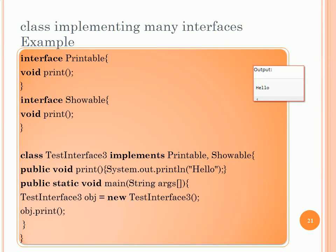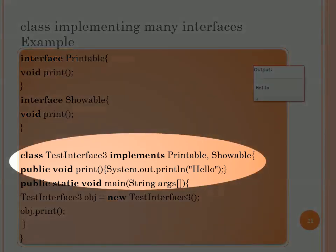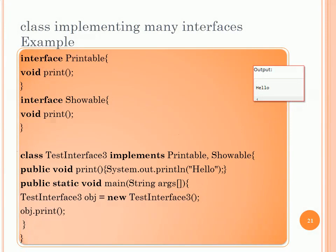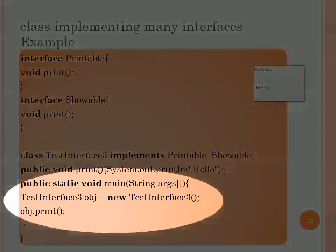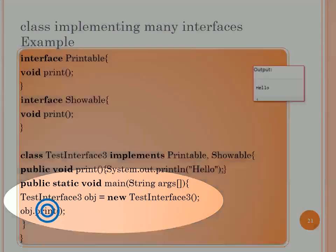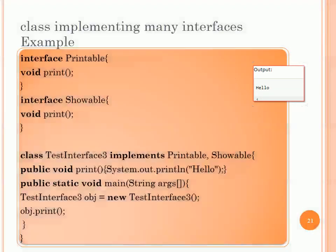Let's take an example of multiple implementation in Java. We create two interfaces: Printable and Showable, both having one abstract method called print. We create a class TestInterface3 that implements both. It implements one method called print — it doesn't matter whether it belongs to Printable or Showable, since both are abstract methods without a body. The implementation simply prints 'hello'. In the main, we create an object of type TestInterface3 and call print — it prints 'hello' with no ambiguity.